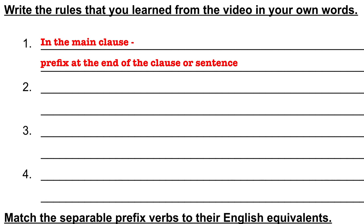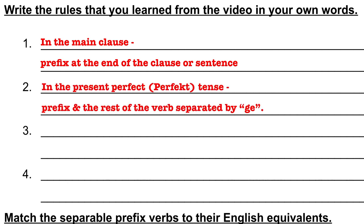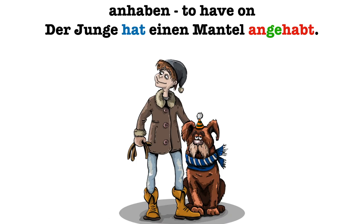So again, that rule was: if the separable prefix verb is used in the main clause, put the prefix at the end of the clause or sentence. If a separable prefix verb is used in the present perfect tense, you need to put those two things back together, but put the prefix and the rest of the verb separated by a GE. An example of that, using the same verb: Der Junge hat einen Mantel angehabt. The boy had a coat on. In this sentence, we have haben still conjugated as the helping verb, and then the other verb is the past participle angehabt. Because we have this separable prefix, we put that before the GE.